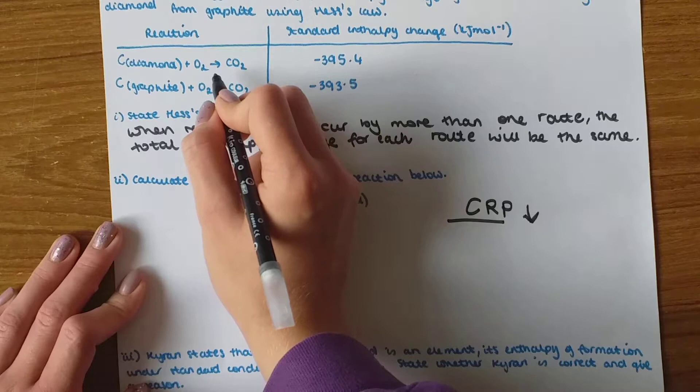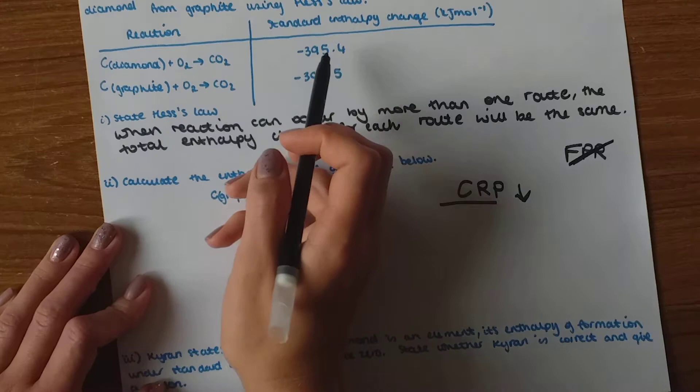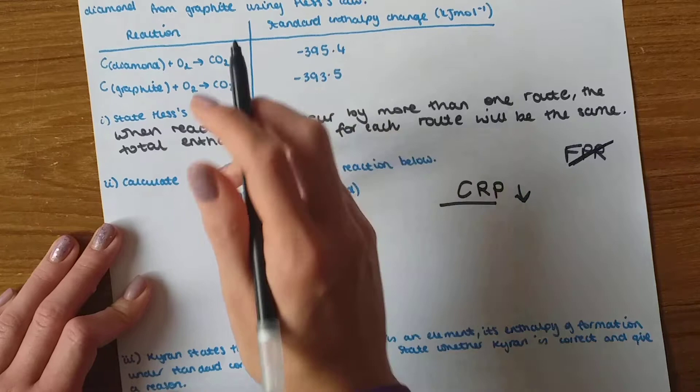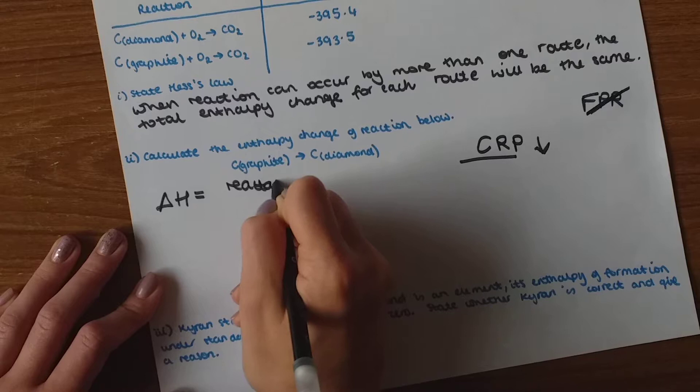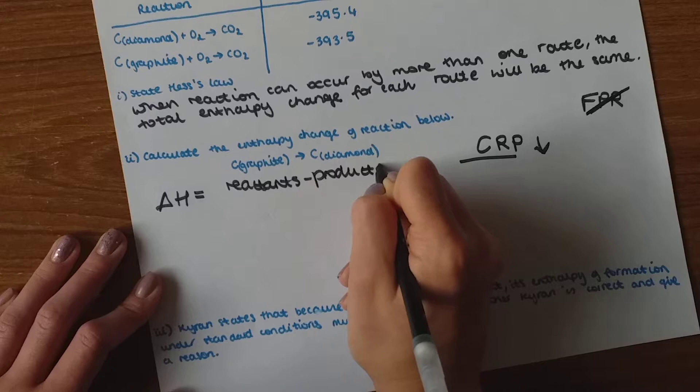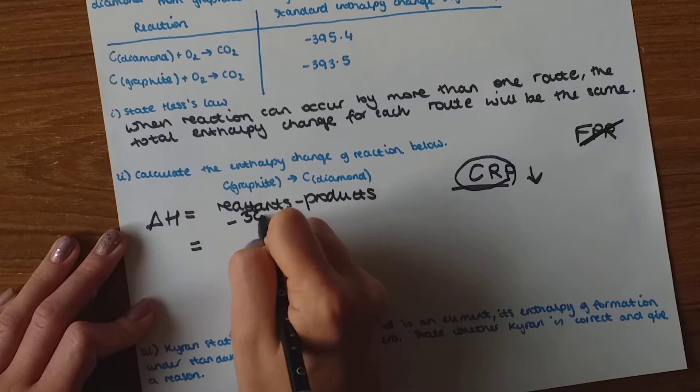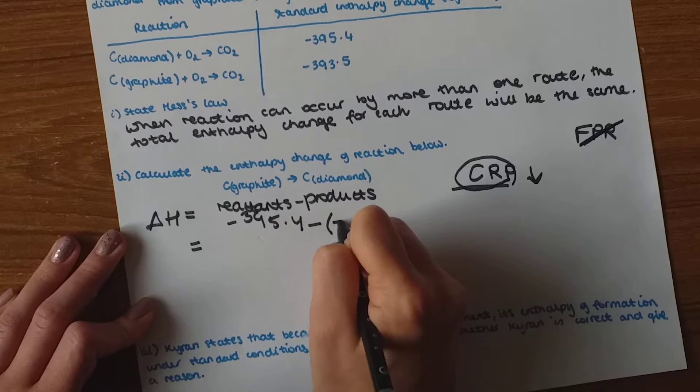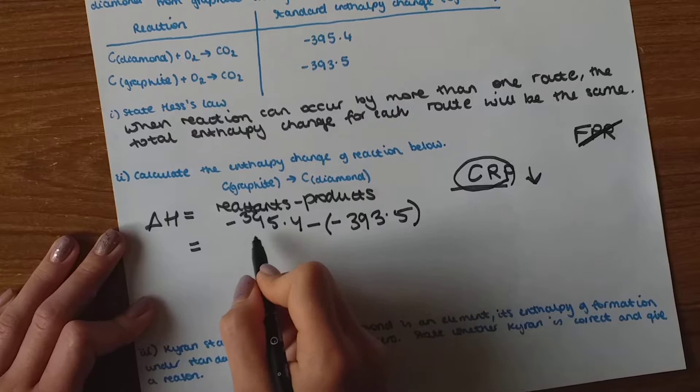So in the table we've got adding oxygen and creating carbon dioxide. That's exactly what happens in combustion. That's how I know it's CRP and not FPR because they're not formation values, they are combustion values. That's the standard entropy change of combustion for this case because oxygen is added and carbon dioxide is formed. So the entropy change is reactants minus products. And in this case reactants is the C graphite. So minus 393.5 and then we take away diamond which is minus 395.4.